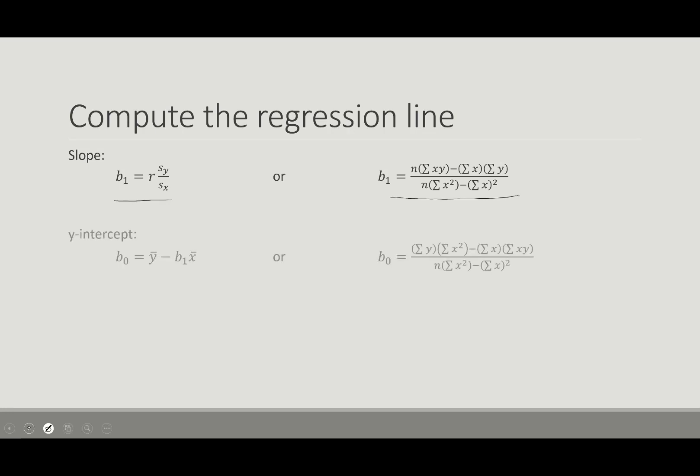Now once we get the slope computed, we would then have to compute our y-intercept, and we would do that by taking y bar, which stands for the mean of my y values, minus b1, so that's going to be the value I compute up here for my slope, times the mean of my x. Or again, we have this alternative equation where we can plug in some of our values for the x's and the y's and the summations of those different things.